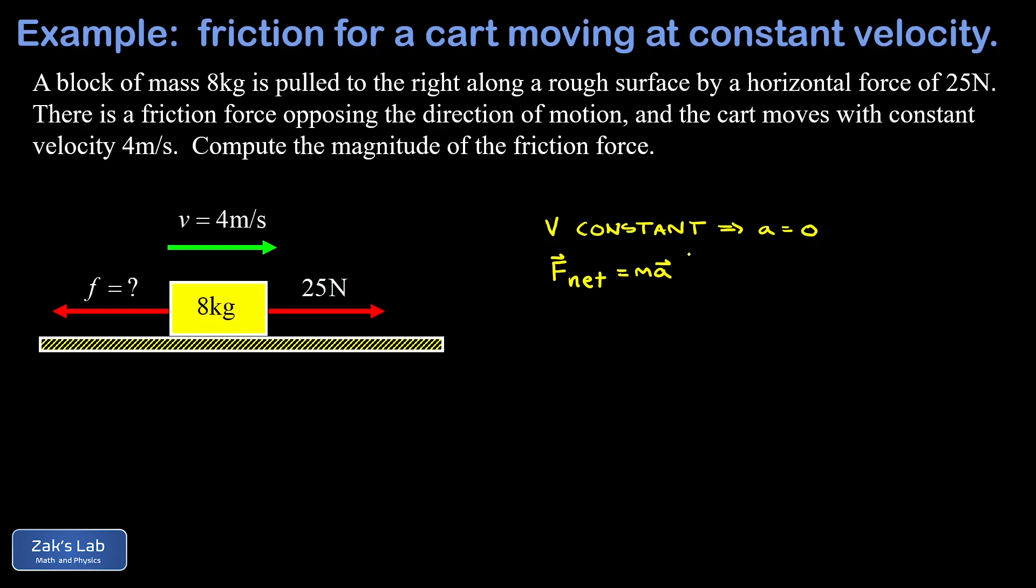So Newton's second law says that F net, the sum of all the forces on an object, is equal to the mass multiplied by the acceleration.